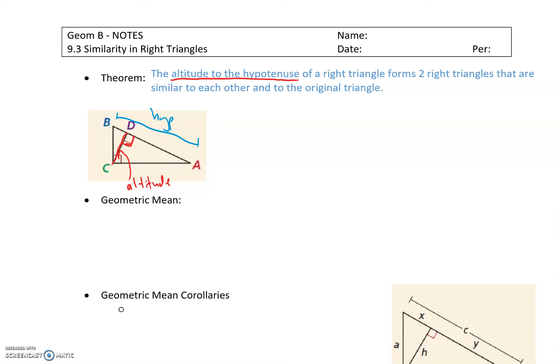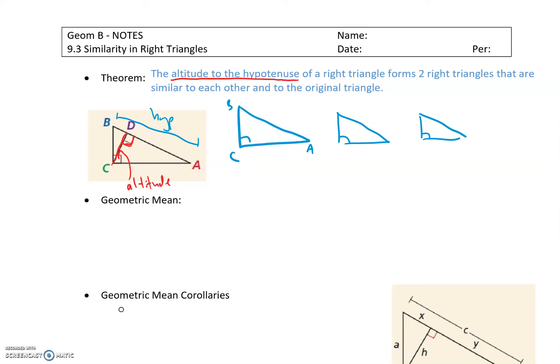What you can do is redraw this if it helps you visualize it. We have that original right triangle ABC, and then we create two smaller right triangles. Order really matters because we want to write the corresponding points in the same position. If I look at this middle-sized right triangle, the right angle is at D. The longer leg goes from D to A, the shorter leg from D to C. So there's that second right triangle, triangle ACD, that corresponds to triangle ABC.